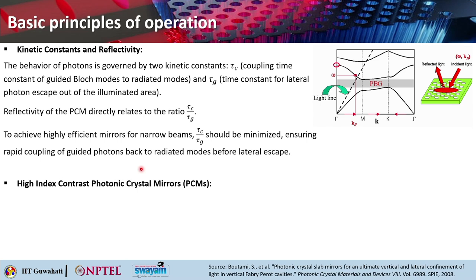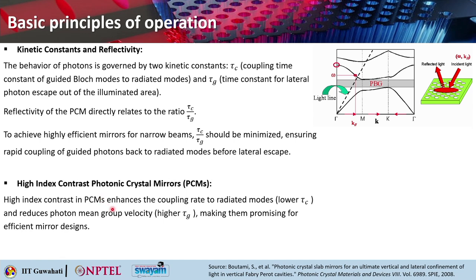The reflectivity of the photonic crystal mirror relates directly to the ratio tau_c by tau_g. For a highly efficient mirror for narrow beams, you want to minimize this ratio — ensuring rapid coupling of the guided photons back to the radiated modes before they can escape laterally. High index contrast photonic crystal mirrors can enhance the coupling rate to the radiated modes, requiring lower tau_c, and also reduce the photon mean group velocity, giving higher tau_g — a promising recipe for efficient mirror design.